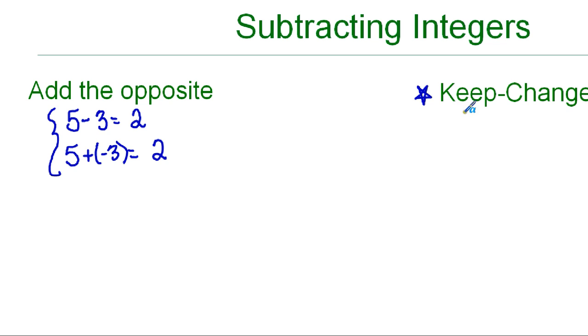And it's called keep, change, change. So, when you keep the first number the same, notice that 5 remains 5, you change the minus to a plus sign, and you change the sign of the second number to its opposite. Here 3 was positive, we made it negative. So, if you keep, change, change, you rewrite it as addition, and then use your addition rules.